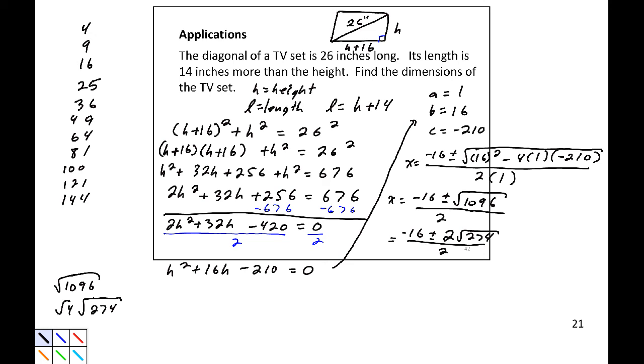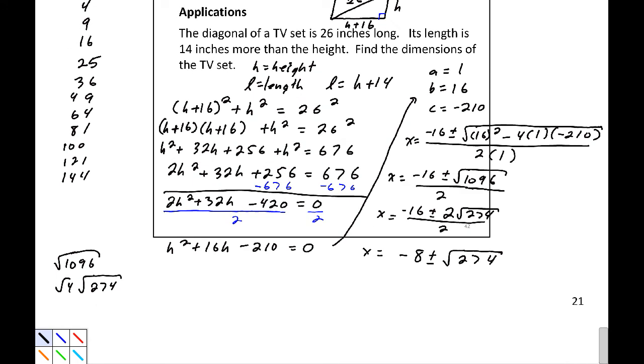Dividing by 2, that would be negative 7 plus or minus 17. Now let's examine what those are. Negative 7 plus 17 is 10, and negative 7 minus 17 is negative 24. So in reality, the value that I care about is going to be equal to 10 inches for the height, which means the length is 24 inches.